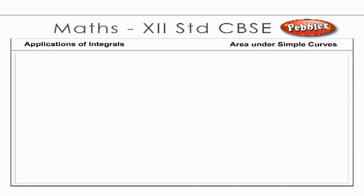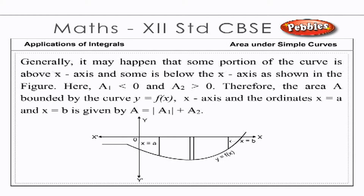Area under simple curves. Generally, it may happen that some portion of the curve is above the x-axis and some is below the x-axis, as shown in the figure. Here, A₁ > 0 and A₂ < 0. Therefore, the area A bounded by the curve y = f(x), the x-axis and the ordinates x = a and x = b is given by A = |A₁| + |A₂|.